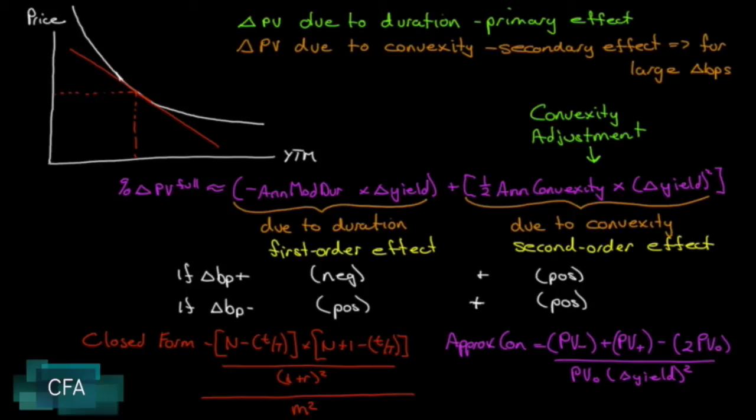So to set the stage for what we're doing here, let's just look at what we know so far. The price change in the present value of a bond due to duration is, if you recall, if we increase our yield by a certain amount of basis points or if we decrease our yield, the price changes.